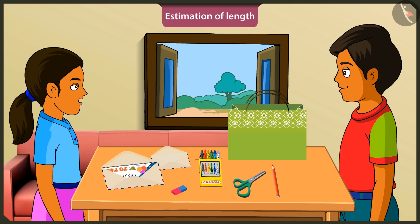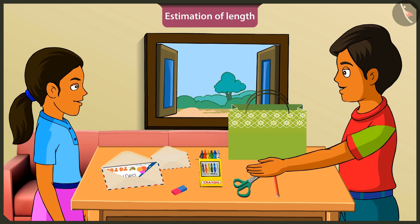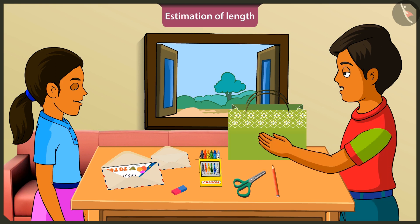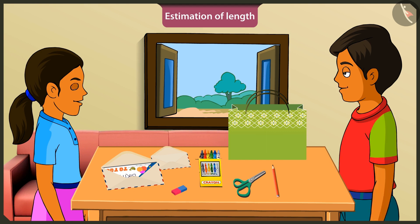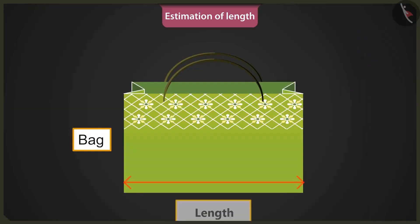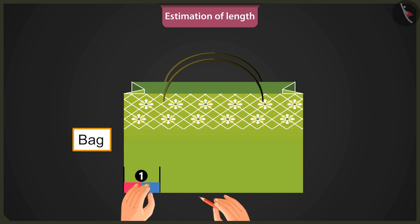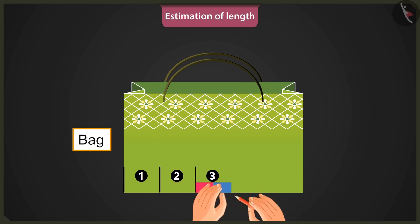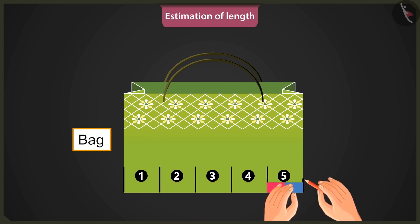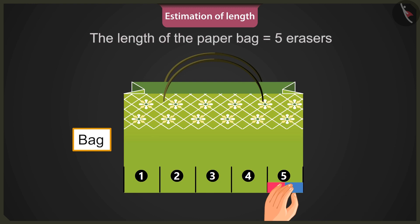Wow, brother — this is really interesting! Now, considering this rubber as a unit of measuring length, determine the length of this paper bag. To measure the length, place the rubber at one end of the bag — it will be one, two, three, four, and five. The length of this paper bag is five erasers.